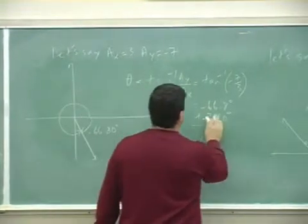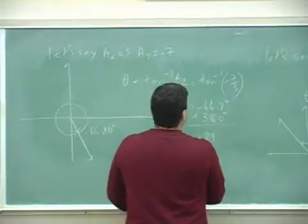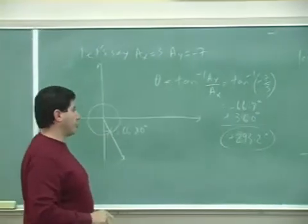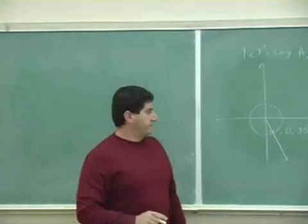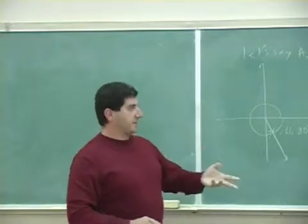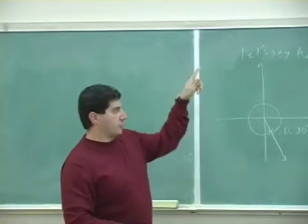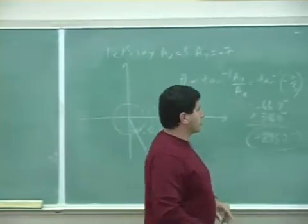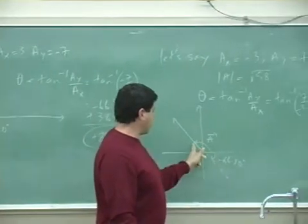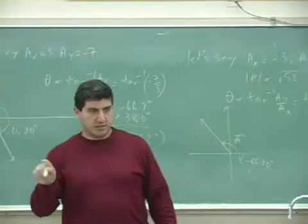Adding 360 gives 293.2 degrees. So far, all examples express angles from the positive x-axis, measured counterclockwise. To summarize: first quadrant — no correction needed; second quadrant — add 180; third quadrant — add 180; fourth quadrant — add 360.